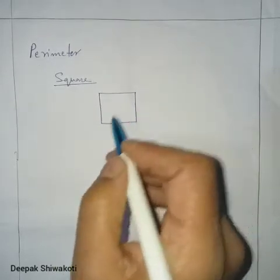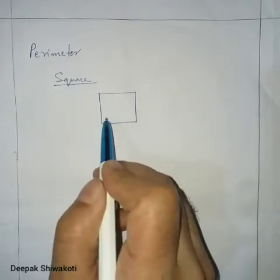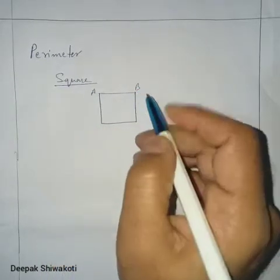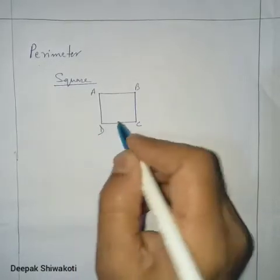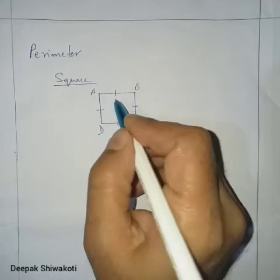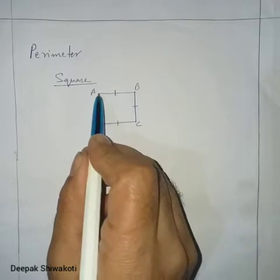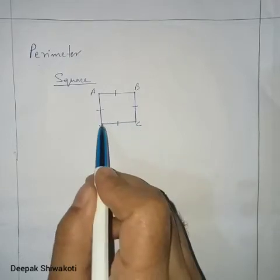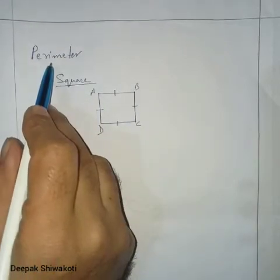here is a square — four line segments bounded together to form a closed figure. Line AB equals BC, BC equals CD, and DA equals AB, meaning all four sides are equal in a square. The perimeter is AB plus BC plus CD plus DA — the total length of the boundary.